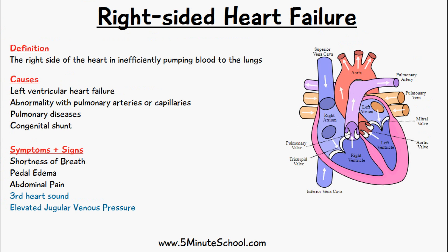Another way to have increased afterload for the right ventricle is if there's some abnormality with the pulmonary arteries or capillaries, which also causes increased afterload. Things like congenital shunts can cause pulmonary artery constriction, which increases the afterload for the right ventricle, leading to an abnormal pressure applied onto the right ventricle and right-sided heart failure. Another cause can be pulmonary diseases as a whole.